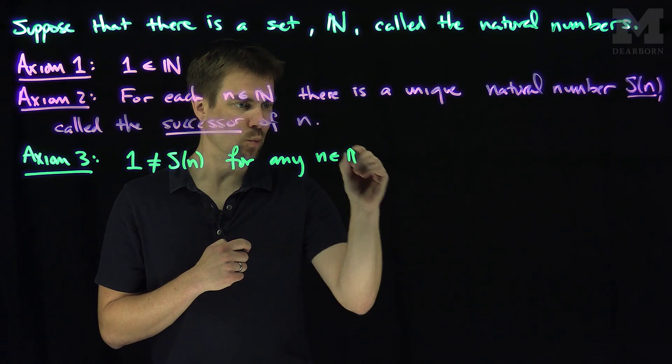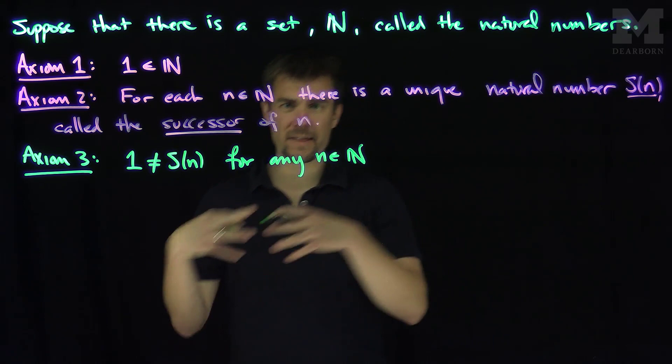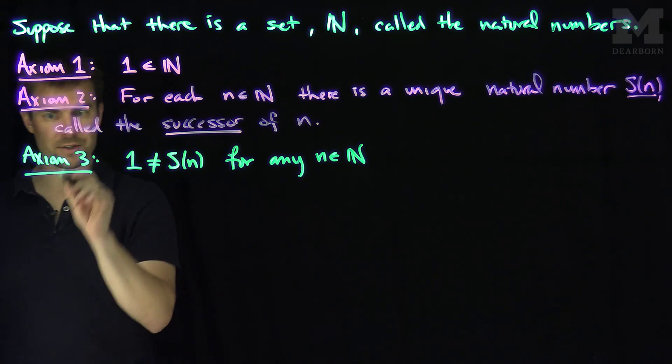In other words, 1 is not the successor of any number. Since the natural numbers are 1, 2, 3, 4, 5, we should think of the successor of 1 as 2, the successor of 2 as 3, and so on. One is not the successor of anything—it's the starting point of the natural numbers, the first natural number. This is the first property of the successor function.